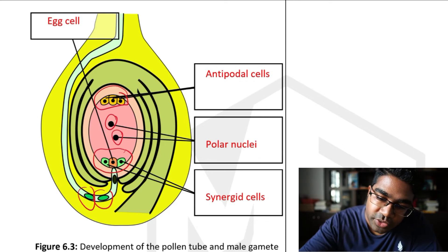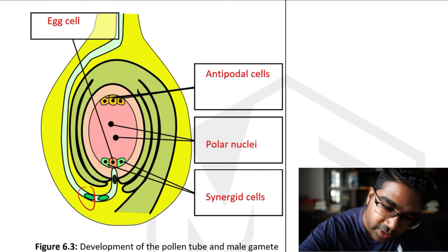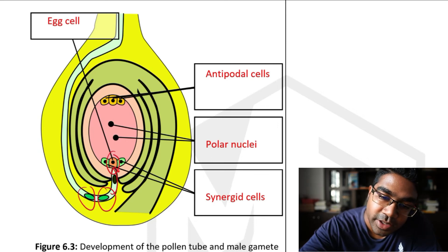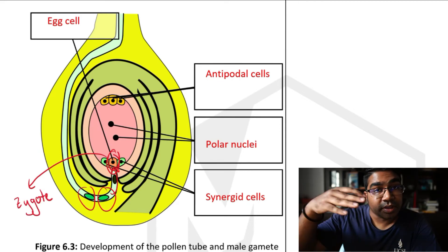So what the two male gametes do is one will come in and fertilize the egg cell, of course. And that will form a zygote. This is fertilized, then we have a zygote. This zygote will develop into an embryo. That's for another video.